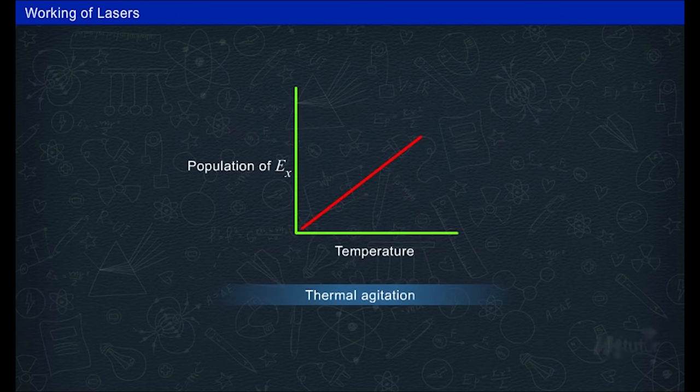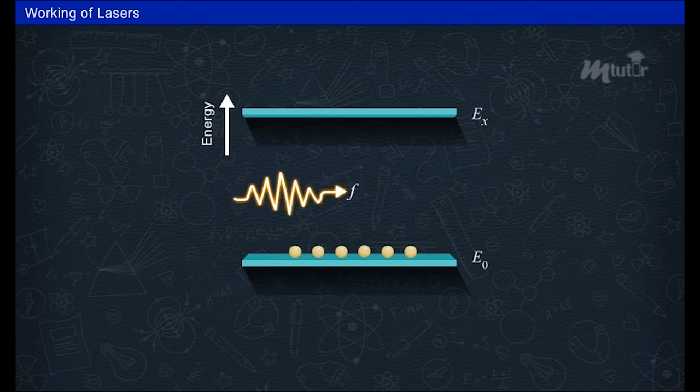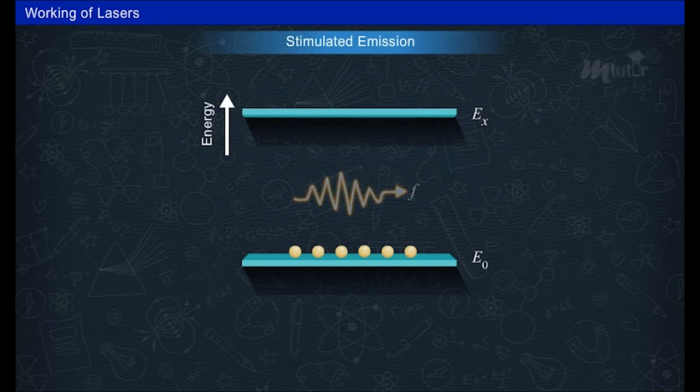Suppose the atoms are flooded with the photons of energy E_x minus E_0. Then by absorption by ground state atoms, the photons will disappear and atoms move to excited state leading to population inversion.